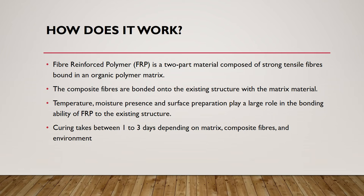The fiber length and orientation within the matrix also affects performance. When applying FRP to a deteriorating structure for the purpose of rehabilitation, the temperature, moisture presence, and surface preparation play a large role in the bonding ability of FRP to the existing structure. Commonly an epoxy resin is used to bond the fibrous materials to the structure. However, the structure needs to be properly cleaned of any chemicals and dirt to achieve proper bonding and avoid unwanted reactions or further corrosion in the future. Curing time of the matrix takes between one to three days depending on the matrix, the composite fibers, and the environment.